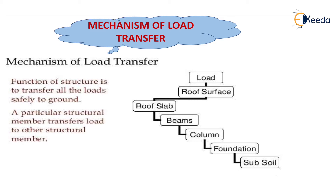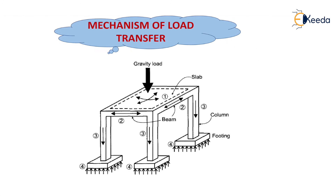The function of the structure is to transfer all the loads safely to the ground. A particular structural member transfers load to another structural member. All dead load and live load acting on the slab as uniformly distributed load is transferred from the slab to the beam. The beam then transfers this UDL load as a point load to the column.